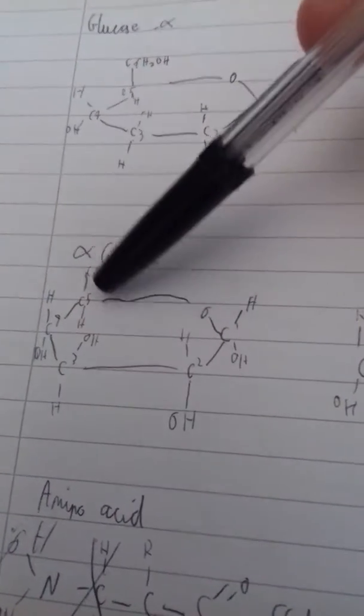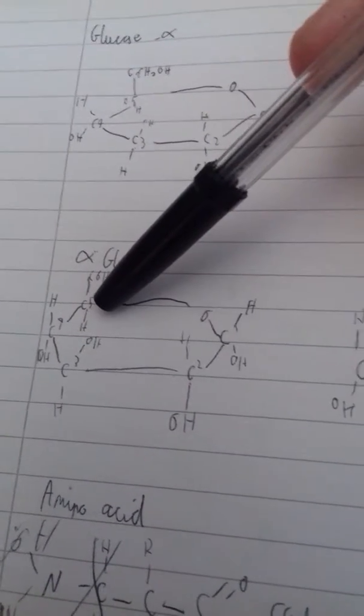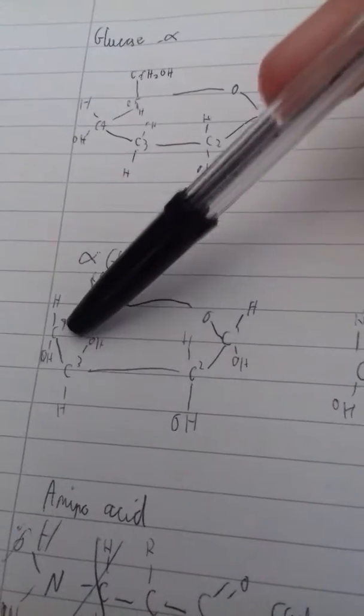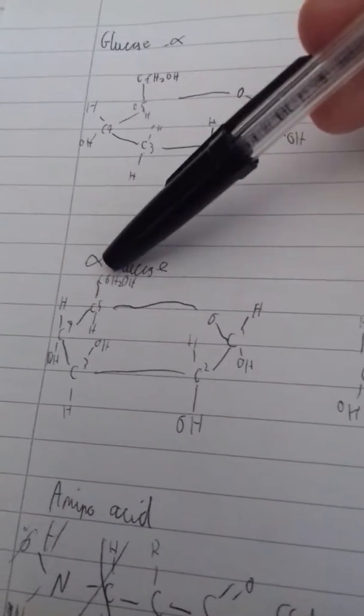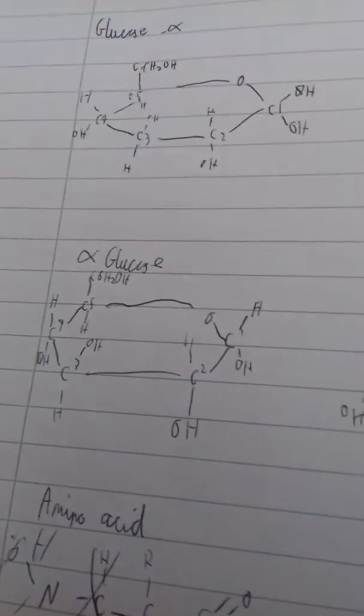The fifth carbon will not have an OH group as it's bonded to the oxygen. Carbon 6 is positioned here with two hydrogens and an alcohol group on top.